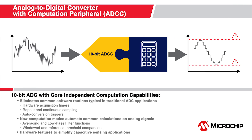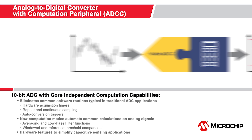Mixed signal applications often require software-intensive algorithms to filter out unwanted noise that can affect accuracy when converting analog input signals to digital data. Microchip's 10-bit analog-to-digital converter with computation peripheral, or ADCC for short, minimizes the amount of code you need to develop by automating many of these tasks in the hardware.